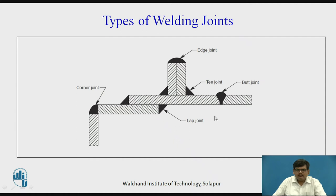The most common welding joint seen everywhere is the butt joint. In a butt joint, the two plates are placed face to face, exactly in front of each other. You can see the first plate, the second plate, and the area that is being welded. Butt joint is the most commonly and widely used joint in welding.